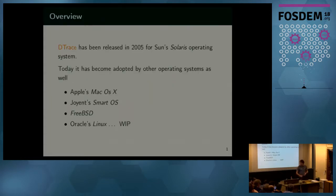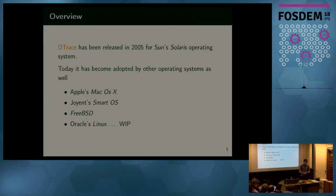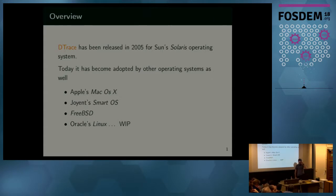I will briefly introduce D-trace itself, because it was first released in 2005. It was designed for Sun Solaris at the time, and it was the answer for performance and observability of our system, so we could support the customers of Sun servers.